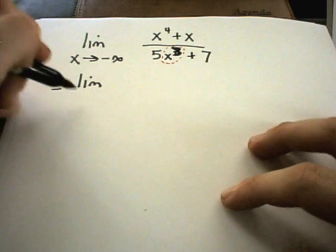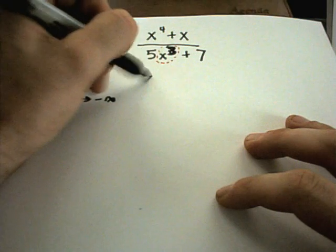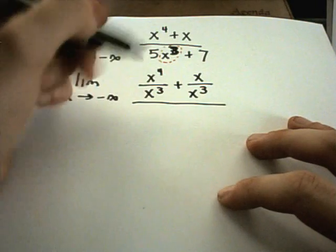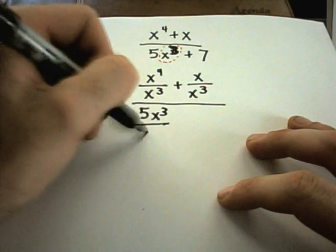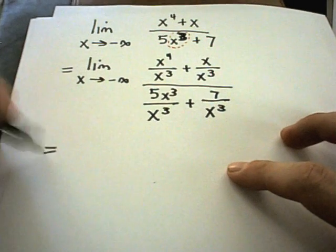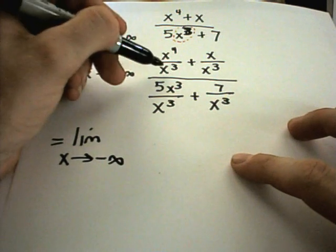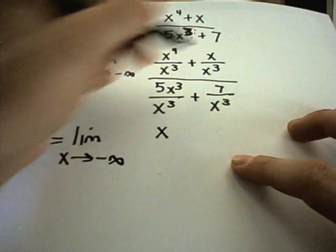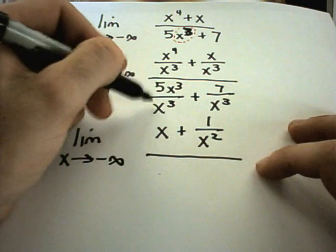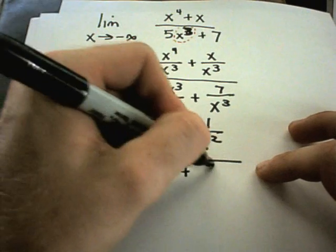I'm going to divide everything by x to the 3rd. So I've got x approaching negative infinity. I'll have x to the 4th divided by x to the 3rd, x divided by x to the 3rd, 5x to the 3rd divided by x to the 3rd, and 7 divided by x to the 3rd. Simplifying: x to the 4th over x to the 3rd leaves me x. x over x to the 3rd is 1 over x squared. 5x to the 3rd over x to the 3rd is 5. And there's nothing to do with 7 over x to the 3rd.